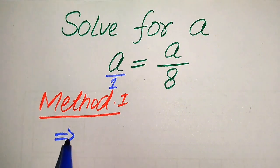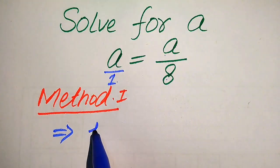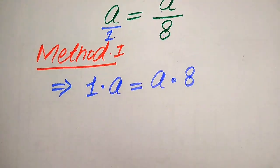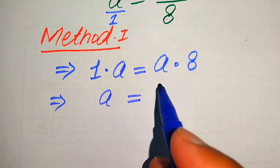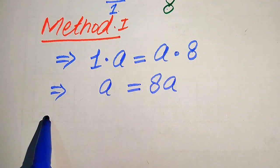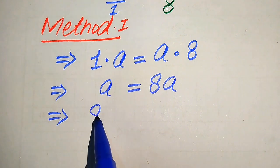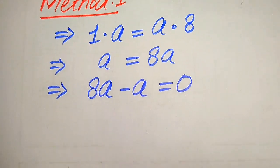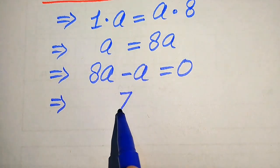When we cross multiply the terms, we multiply this 1 with a and 8 with this a, so it will be written as 1 multiplied by a is equals to a multiplied by 8. Further, this becomes a is equals to 8 times of a. We move this a to the right hand side, so it will be written as 8 times of a minus a is equals to 0.